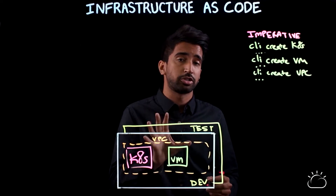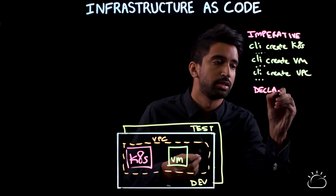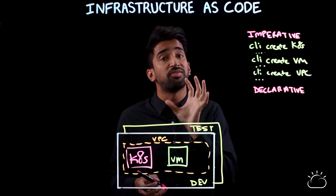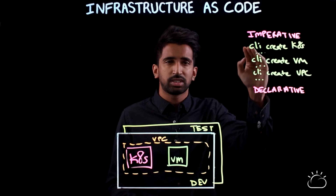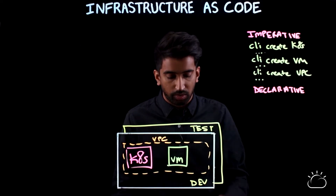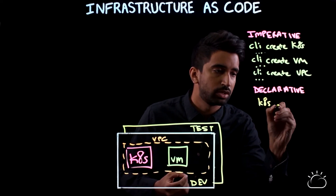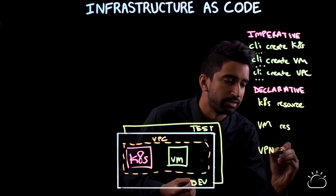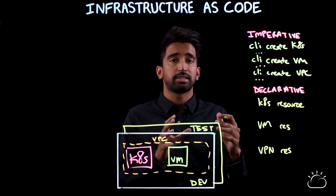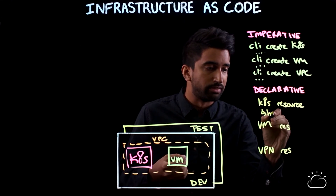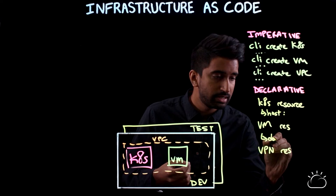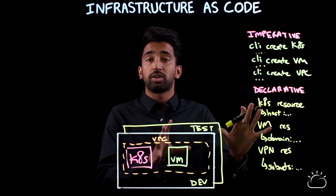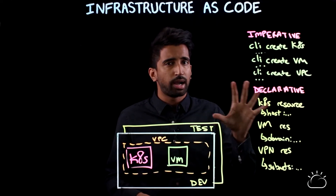Another approach to infrastructure automation is declarative, and this is actually my favorite approach. A declarative approach would use something like Terraform. What it basically allows you to do is define the final state of your infrastructure and then let the provider handle the rest. So instead of defining every step, you just define the final state. In this example, you might define a Kubernetes resource, a VM resource, and a VPC resource. Another great thing about this is that it's generally managed through simple config maps — you could define a host, a domain, or even subnets. In general, a declarative approach allows you to more easily manage the configuration and is my preferred approach for automating infrastructure.